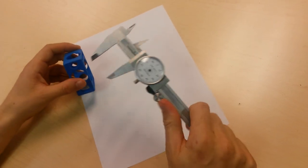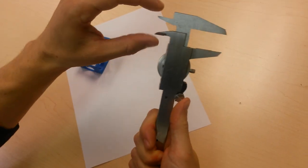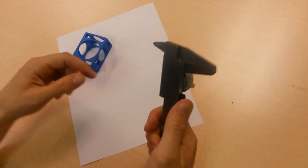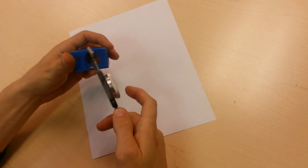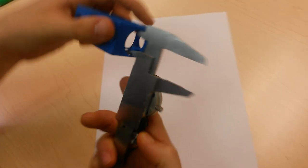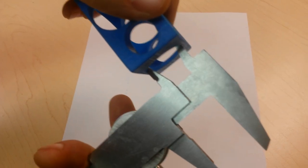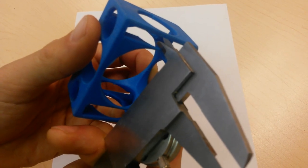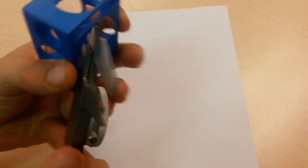If you want to measure the inside of something, you can use this function right here. So you can see when I close those, those are right there together and then when I open it, I can measure the inside of something right like that. So I can measure the inside of that.